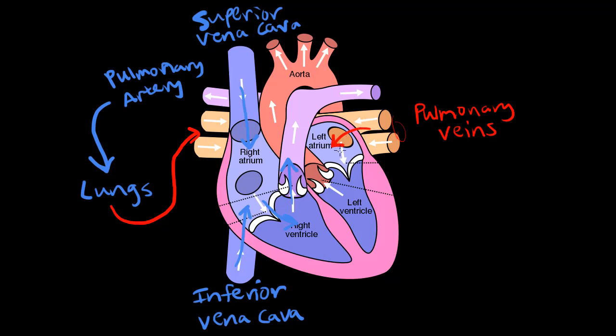So we have oxygenated blood going through here, the bicuspid or mitral valve, into the left ventricles, through the aortic semilunar valve, into the aorta, which is also an artery. And from here, blood flows to all these different branches on the aorta, and it's going to go to all the different places on our body.